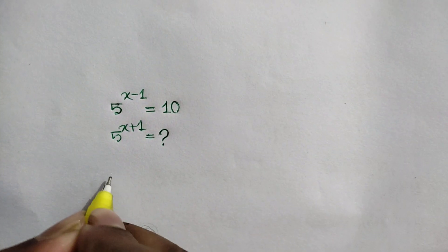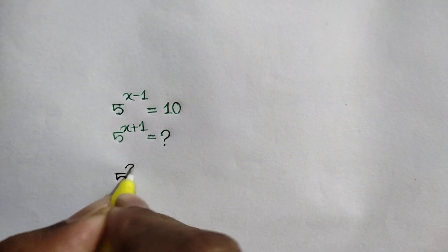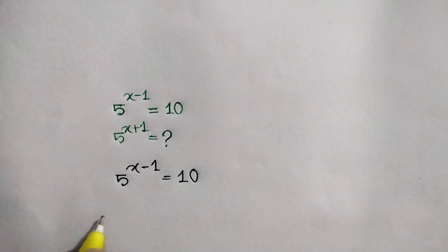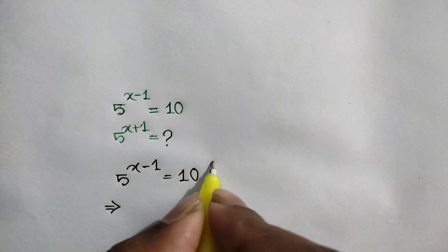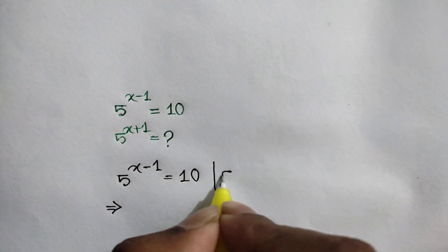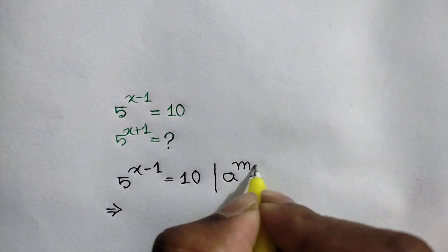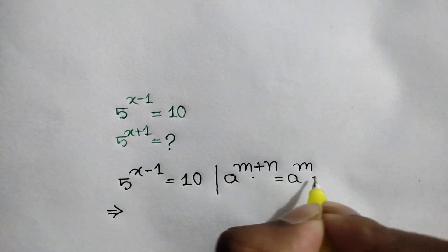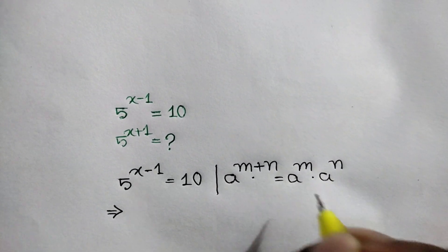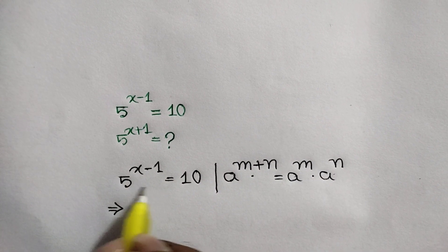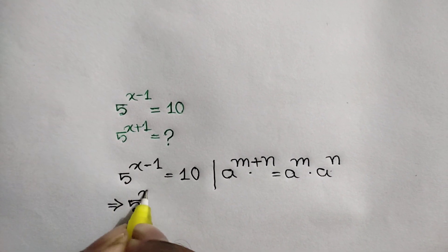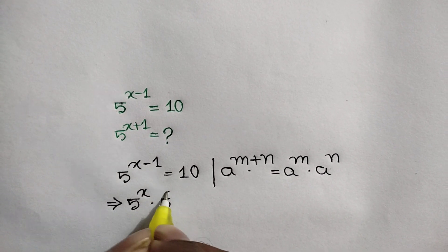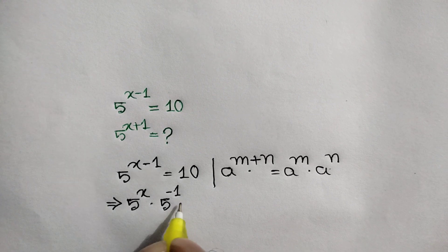We have given 5 to the power x minus 1 is equal to 10. Here we can apply the rule: a to the power m plus n is equal to a to the power m times a to the power n. Applying this rule, we can write 5 to the power x times 5 to the power negative 1 is equal to 10.